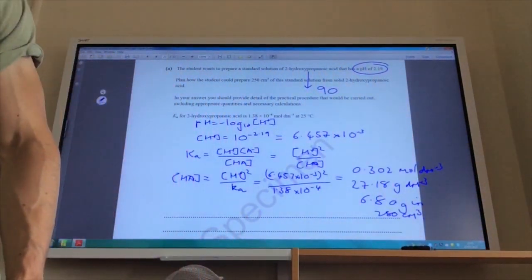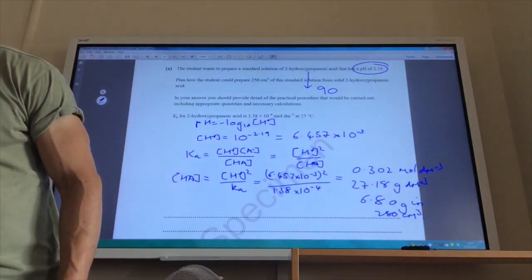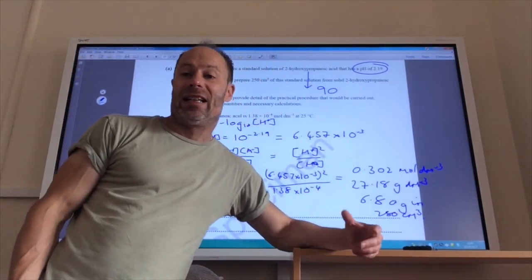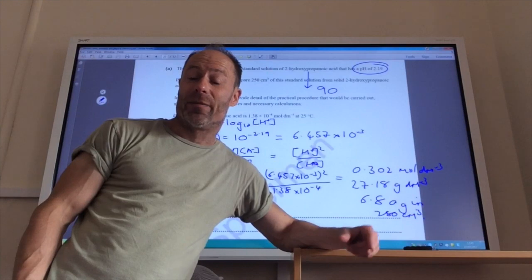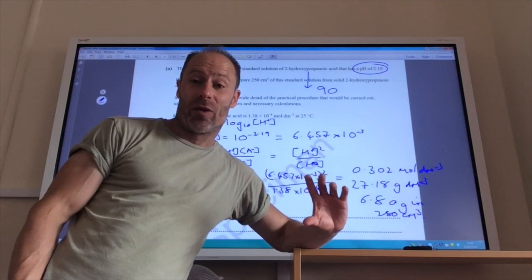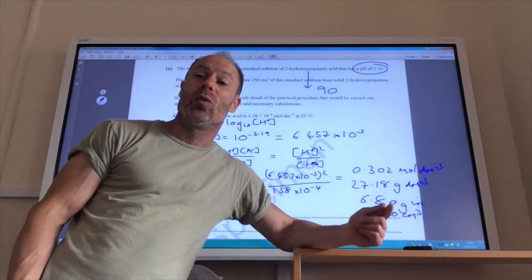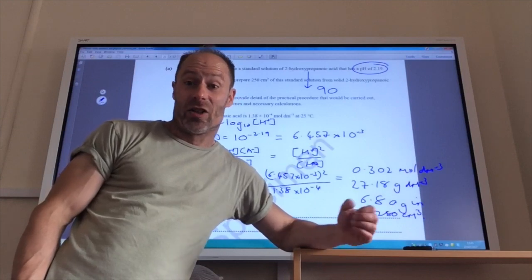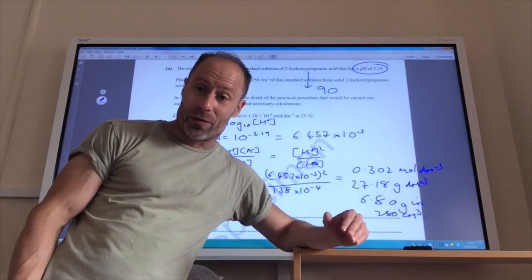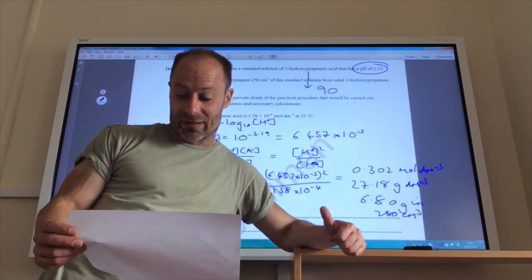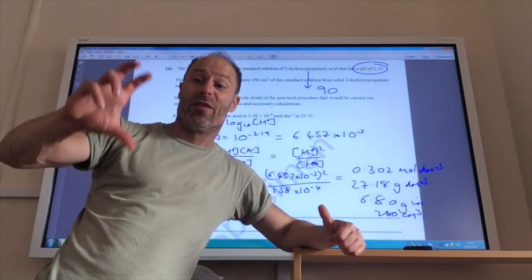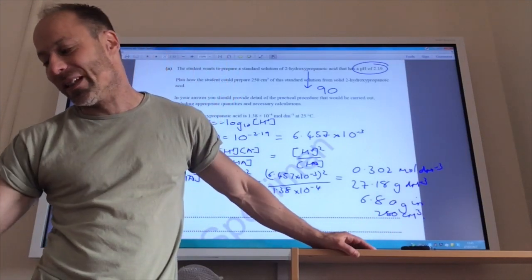Obviously, in terms of the experimental procedure that you would go about, you would dissolve the 6.8 grams, measure that in a beaker, and then add water to dissolve it, then add that water into a volumetric flask, wash out the beaker with more distilled water, pour that into the volumetric flask, so that you make sure all the solids dissolved and be transferred to the volumetric flask. Make the volumetric flask up to 250 and then mix thoroughly to make sure that there's an even distribution. So, you would invert the volumetric flask, say, 10 to 20 times or so.